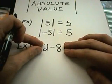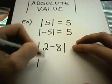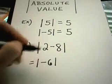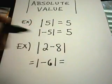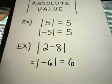Think about this stuff like it's parentheses. So you want to simplify inside first. So 2 minus 8, that's negative 6. I've now got a single thing. The absolute value of negative 6 is just plain old positive 6. And that's your answer.